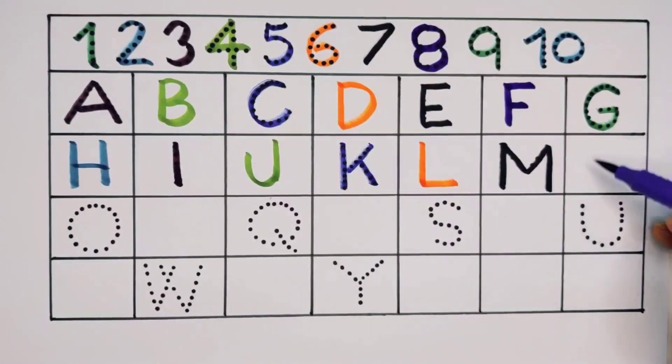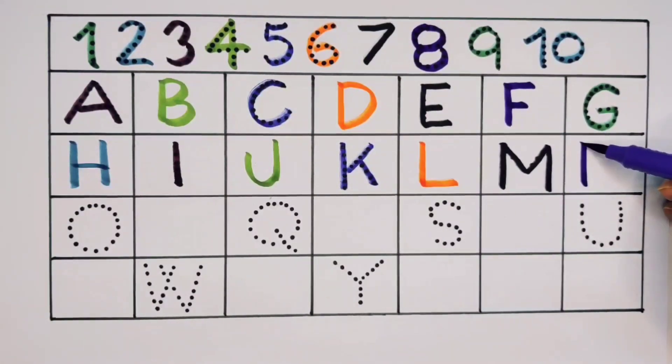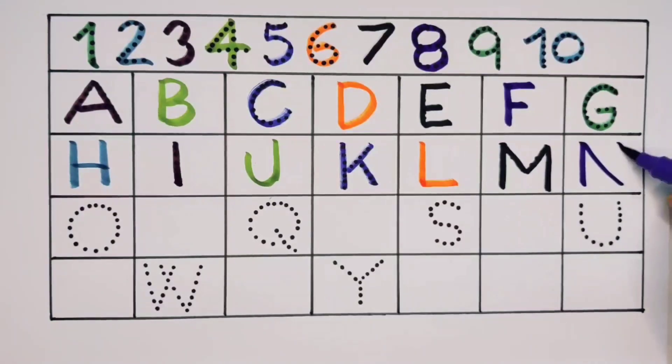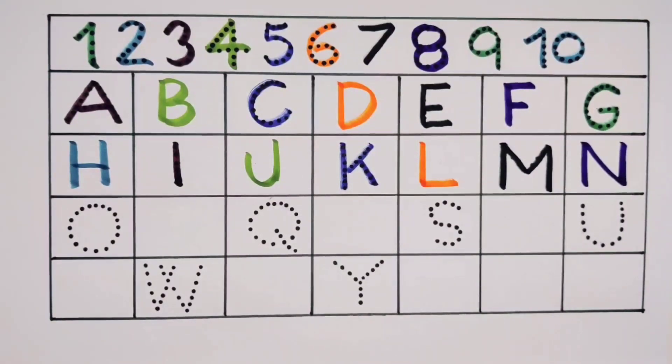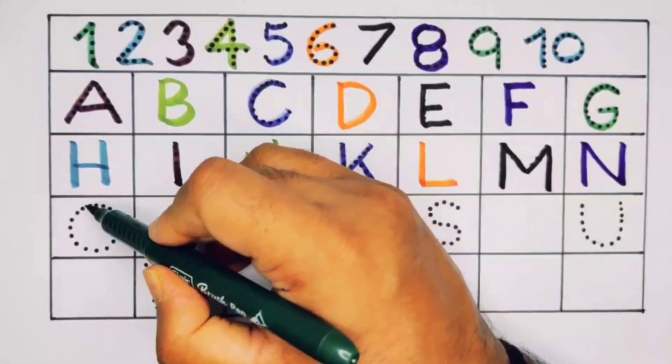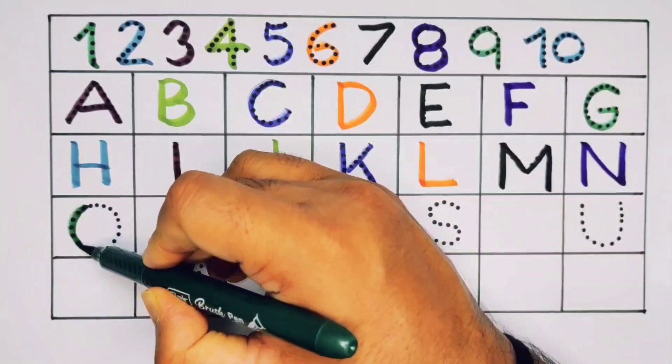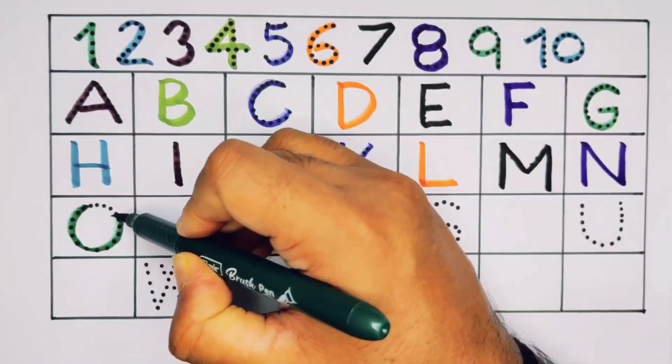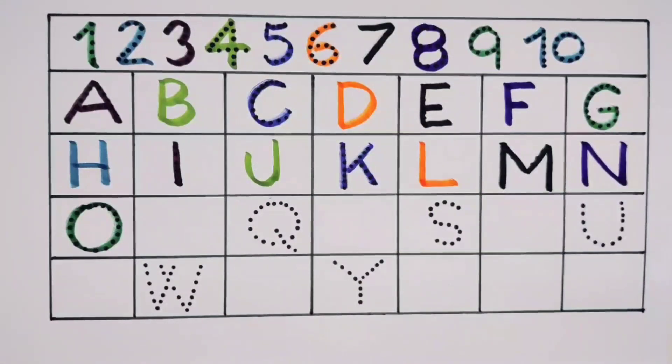What will next? This is N. N for nest. N for nest. Now O. O for orange. O for orange. What will next? It's P. P for parrot. P for parrot.